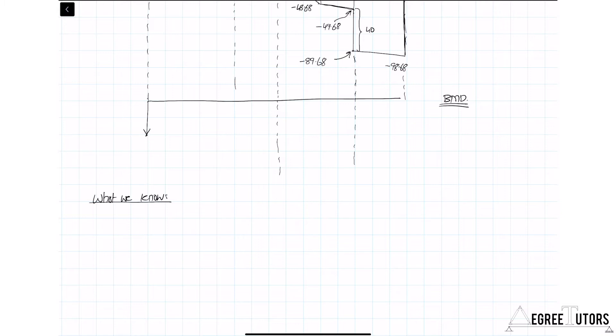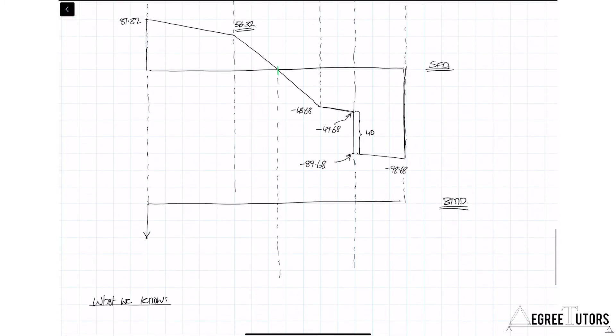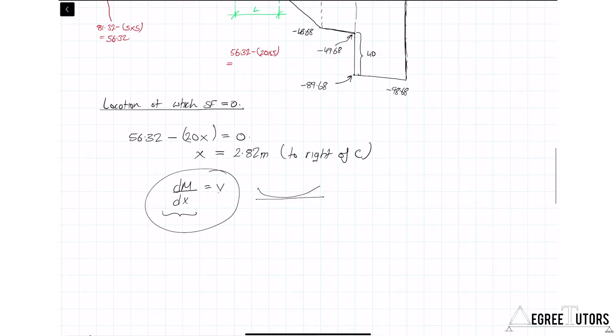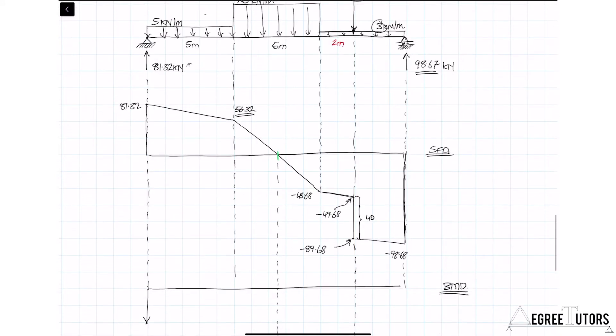The bending moment diagram is going to be a series of curves. How do I know that? Well, because the shear force diagram is made up of a series of inclined straight lines. That means the bending moment diagram is going to be a series of polynomials or curved lines. We know that because of this relationship here. If this value here is constantly changing, that means the slope of the bending moment diagram is constantly changing, and therefore it's a curve.